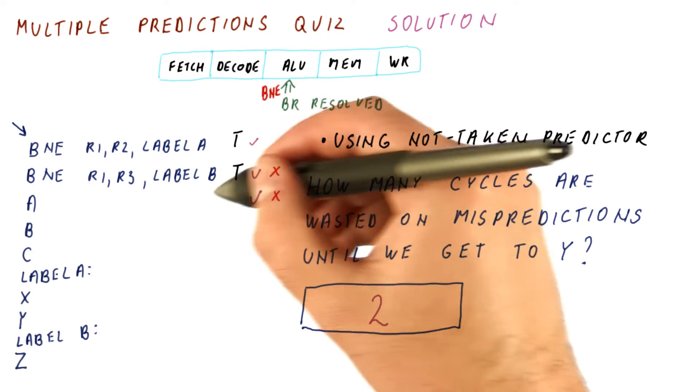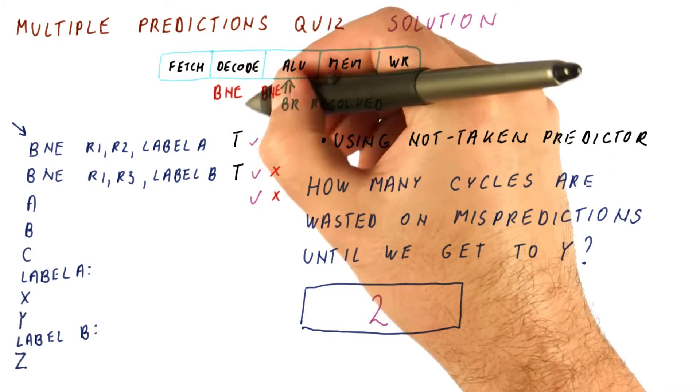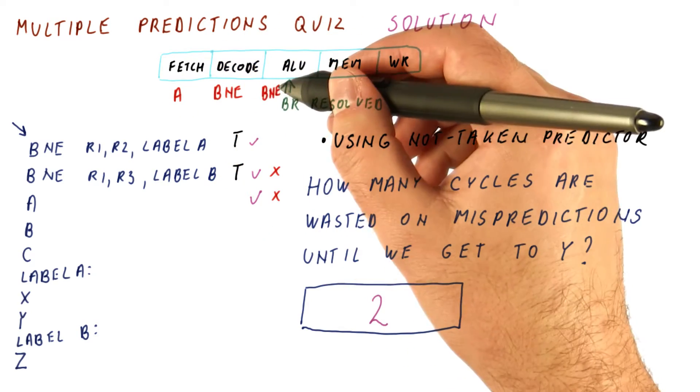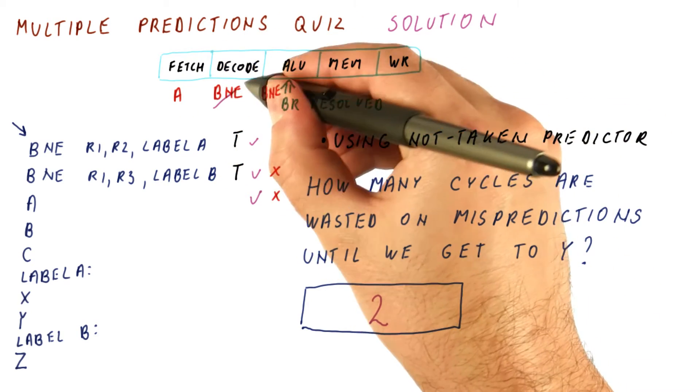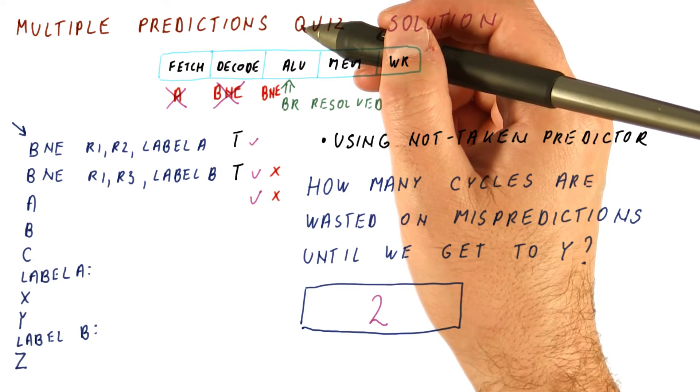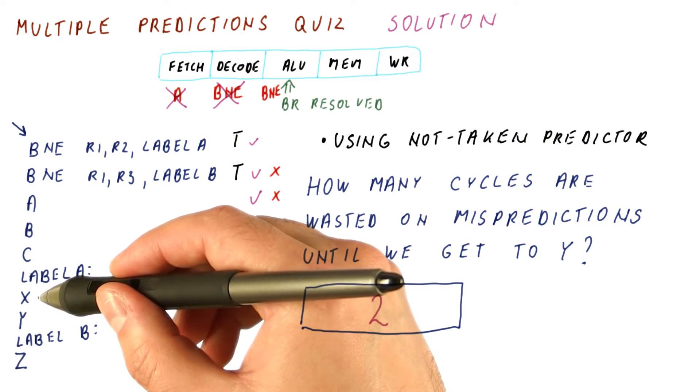The branch that was fetched after it is at that time here, and the instruction A is here. And what now happens is we flush the pipeline by converting these two into pipeline bubbles, and next cycle we will be fetching X.